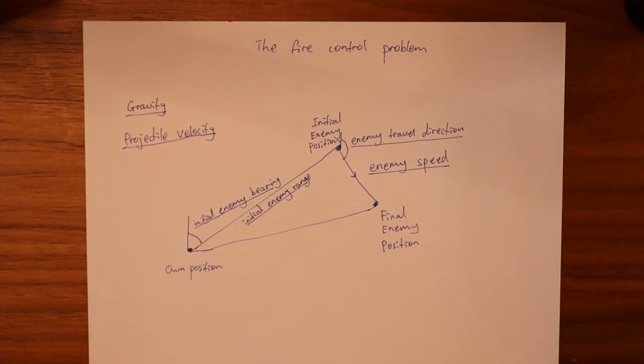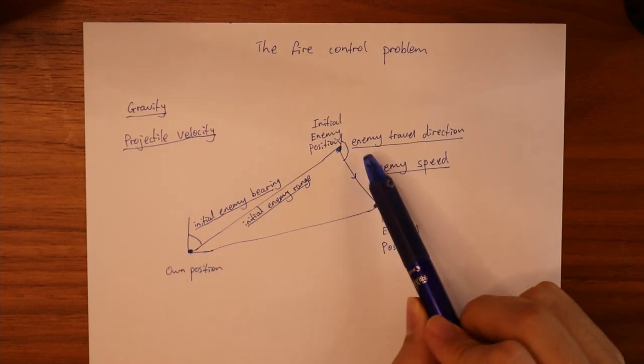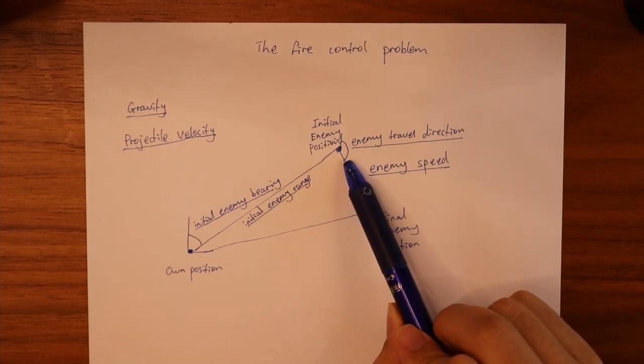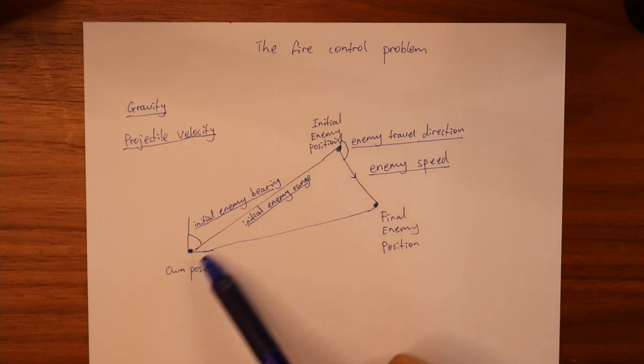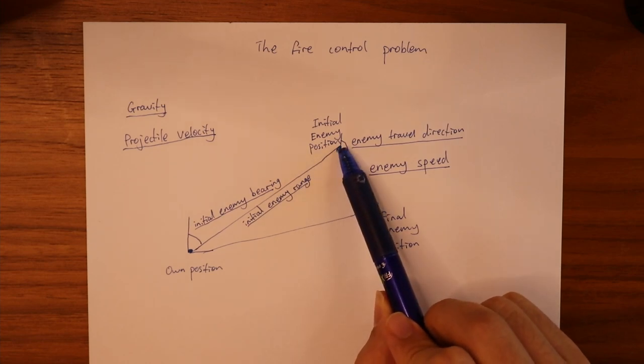And this is a top-down view of the situation. This is where you are at the point of firing and this is where the enemy is at the point of firing. So if you just aim directly at the enemy then of course you would miss at the point of impact.